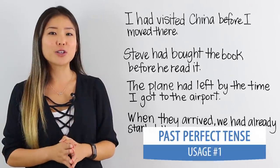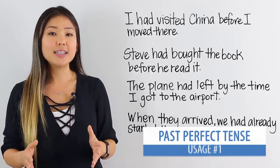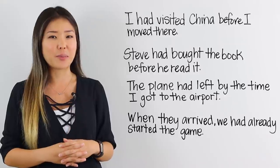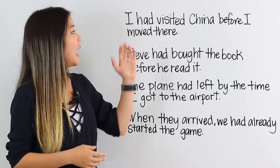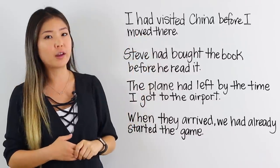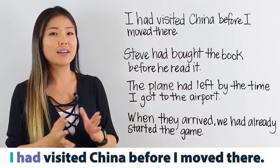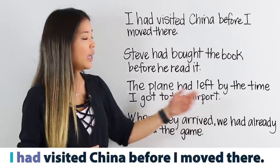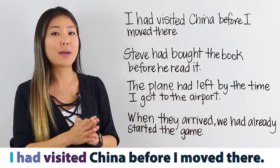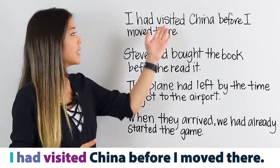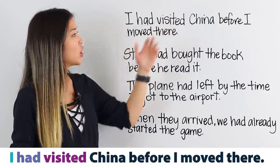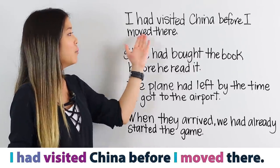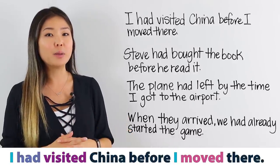Let's take a look at the first usage of the past perfect tense. This tense can be used to describe an action in the past that happened before another action in the past. Here are some examples. 'I had visited China before I moved there.' No matter what the subject, you follow with 'had' — I had, Steve had, the plane had, and we had. Then we follow with the past participle of the verb. In this case, it's 'visited': I had visited China. You'll notice that the second verb is in the past simple tense — 'I moved there' — and I'll talk about that a little bit more later on.